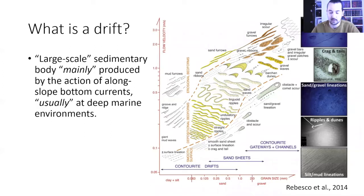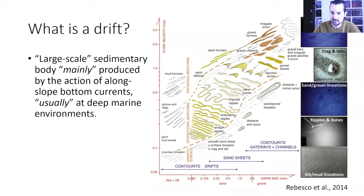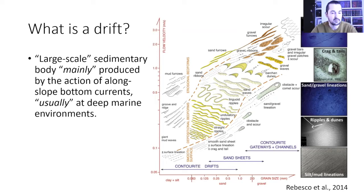Drifts have been studied over the last years all around the oceans, and sometimes even onshore. There are plenty of definitions, so I tried to make my own definition from the common items that appear in every definition in the literature. I would say that a drift is a large-scale sedimentary body mainly produced by the action of along-slope bottom currents, usually at deep marine environments.